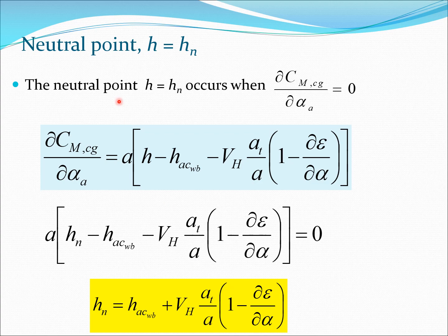Let us now define the neutral point. We will use the nomenclature H-subscript-N. Whenever H equals HN in our previous formulas, we hit the neutral point. The neutral point occurs when the derivative of CMCG with respect to alpha-A equals zero. To find this, I take the derivative from the previous slide, set it equal to zero, and replace H with HN. From this I can immediately calculate the value of HN.